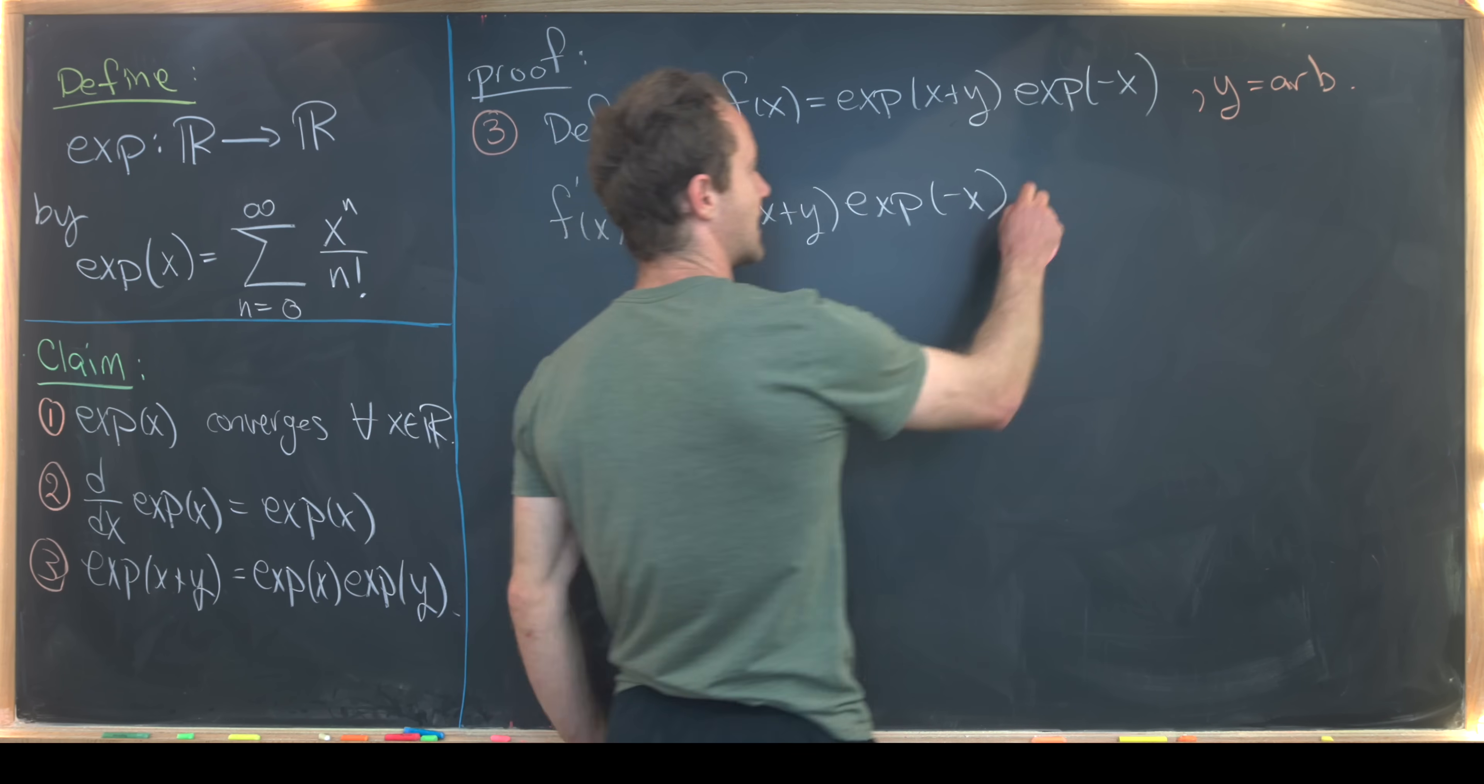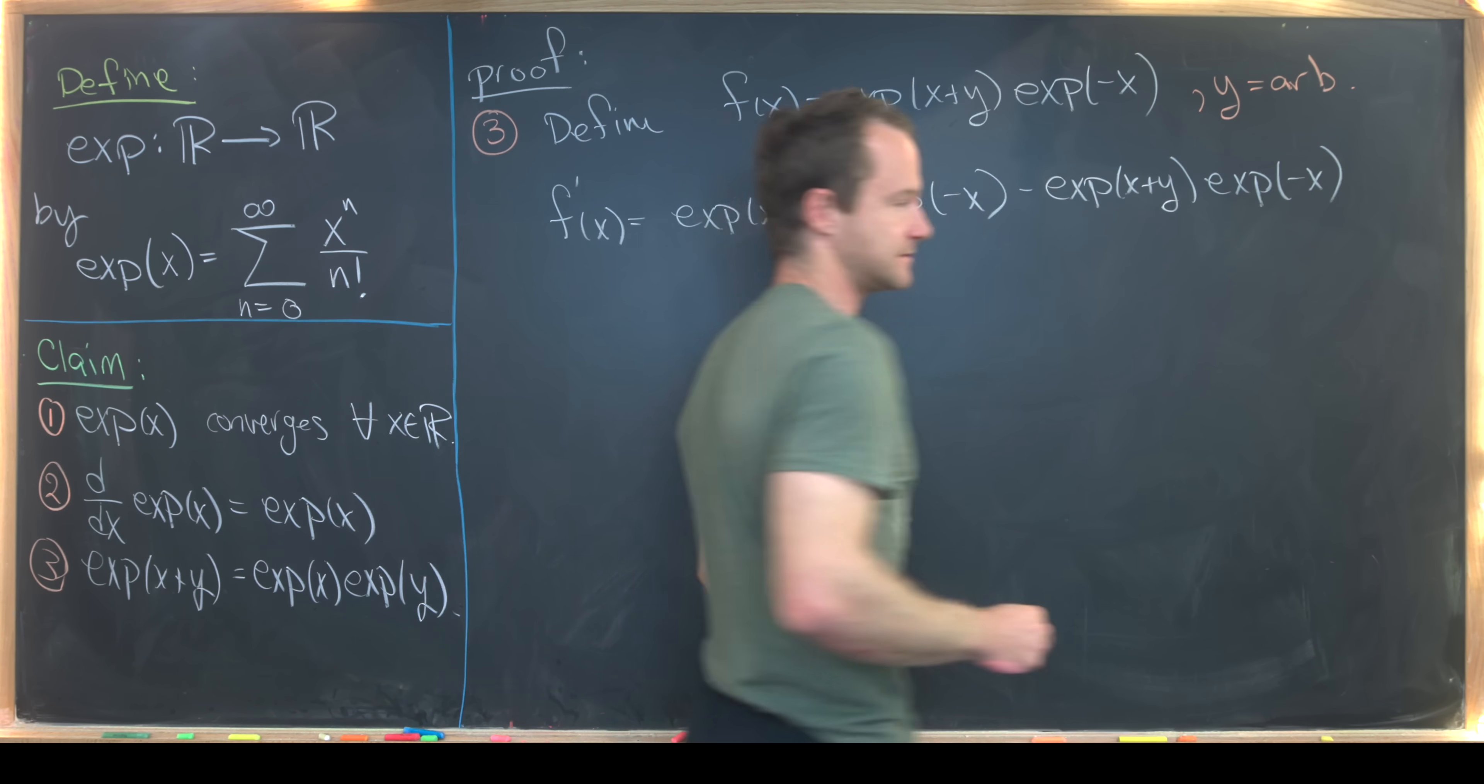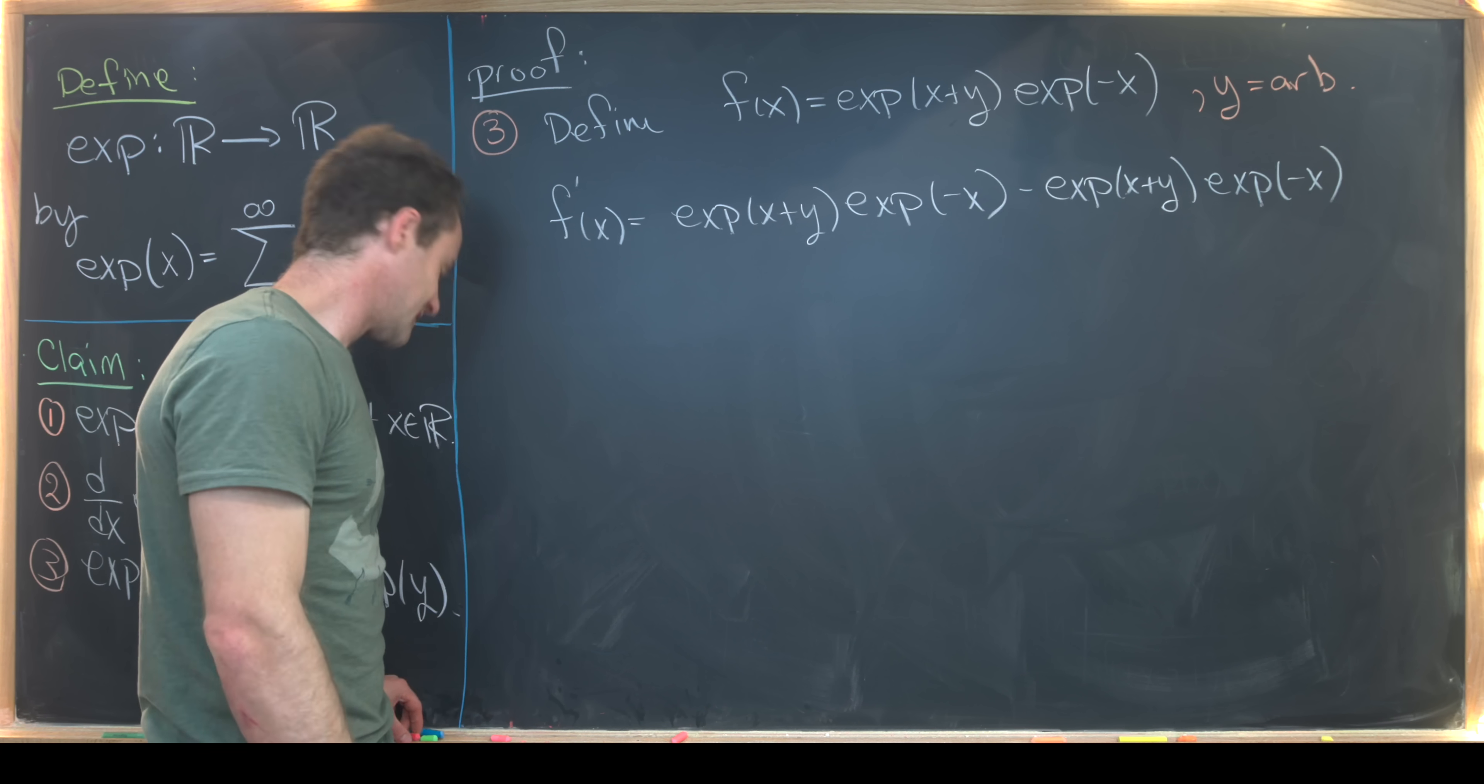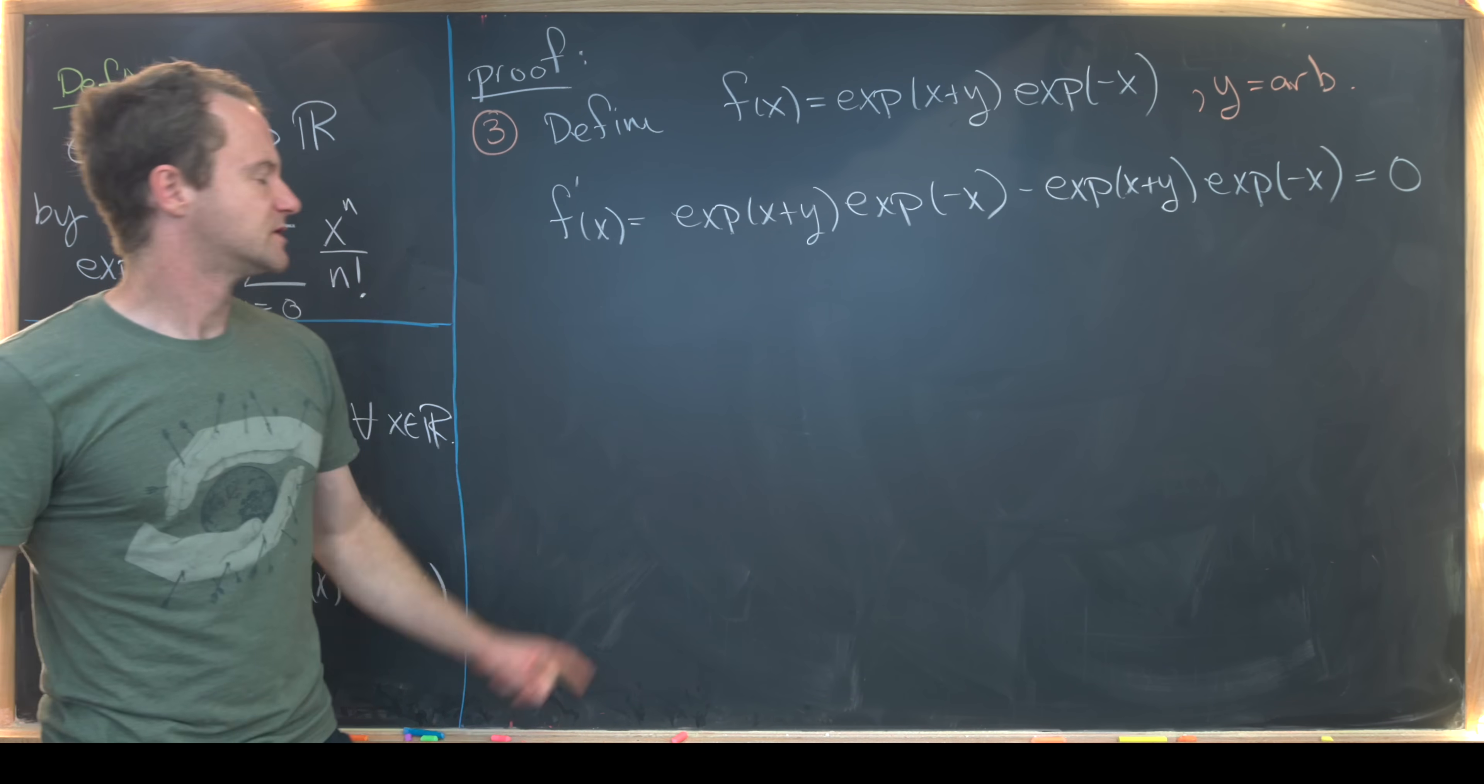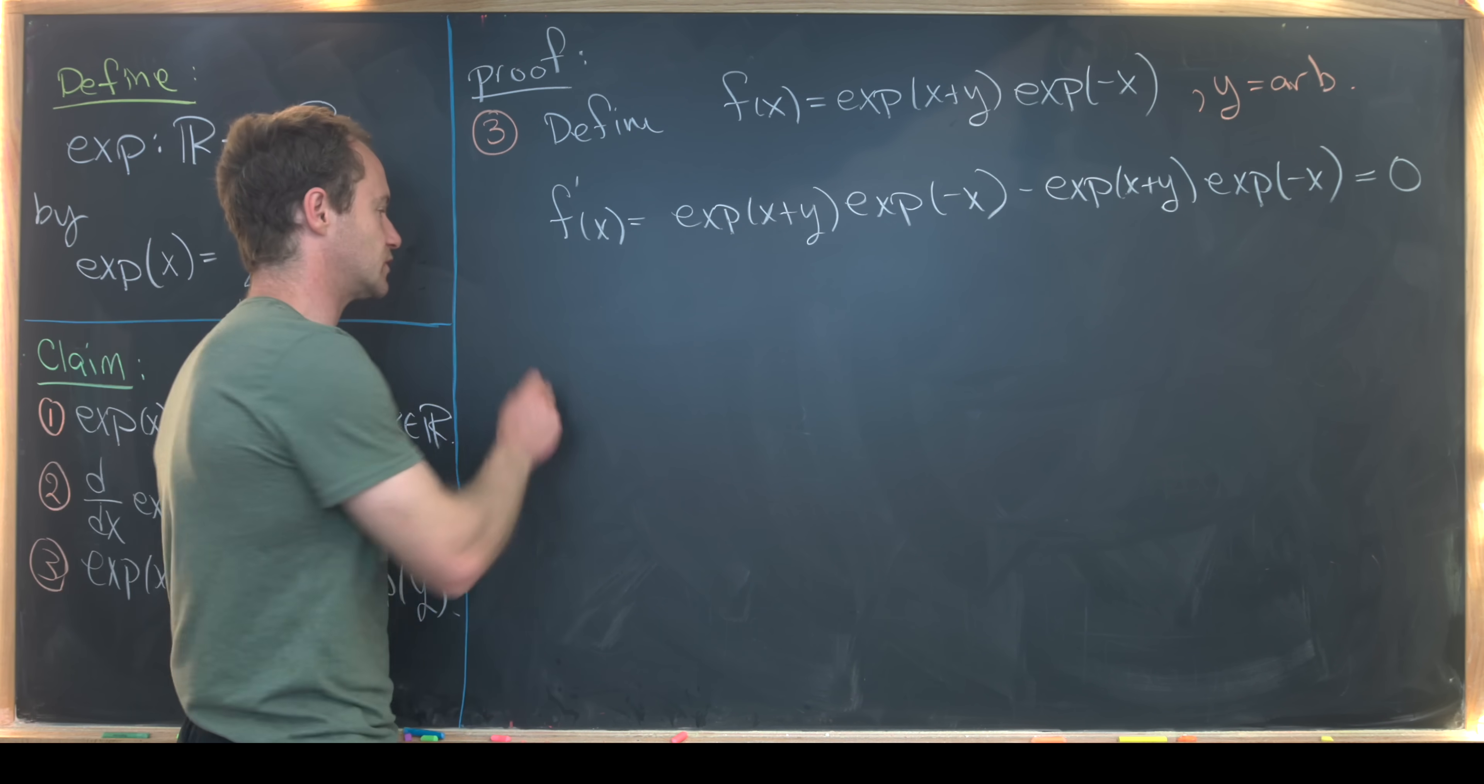The next we'll have minus exp(x+y) exp(-x). That's by the chain rule. So the derivative of negative x is negative one. But let's notice that here we've got plus something and minus something, but those are going to clearly cancel out to zero. So now looking at the extreme left and right hand side of this line, we see that f prime is equal to zero.